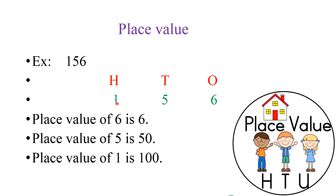Can you tell me which place 1 is in? 1 is in the 100's place — we can also call it the 100's column. Then what will be the place value of 1? As 1 is in the 100's place, the place value of 1 is 100. Hope you are all now able to answer what place value is.